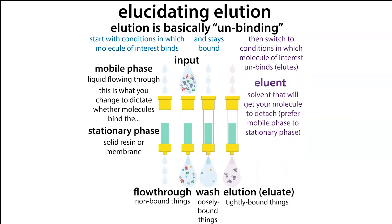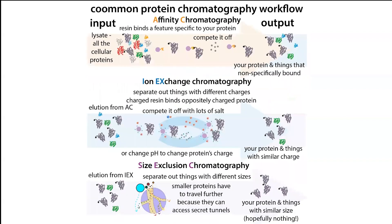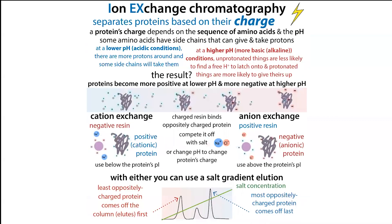Similarly, for charge-based separation, we can use salt — this comes into play in ion exchange chromatography, where the protein binds to the column on the basis of opposite charges. We can then compete it off with oppositely charged particles: the ions that make up salts. If you dissolve sodium chloride in water, you get sodium ions (positively charged) and chloride ions (negatively charged), which compete with the binding sites on the resin and push your protein to elute.